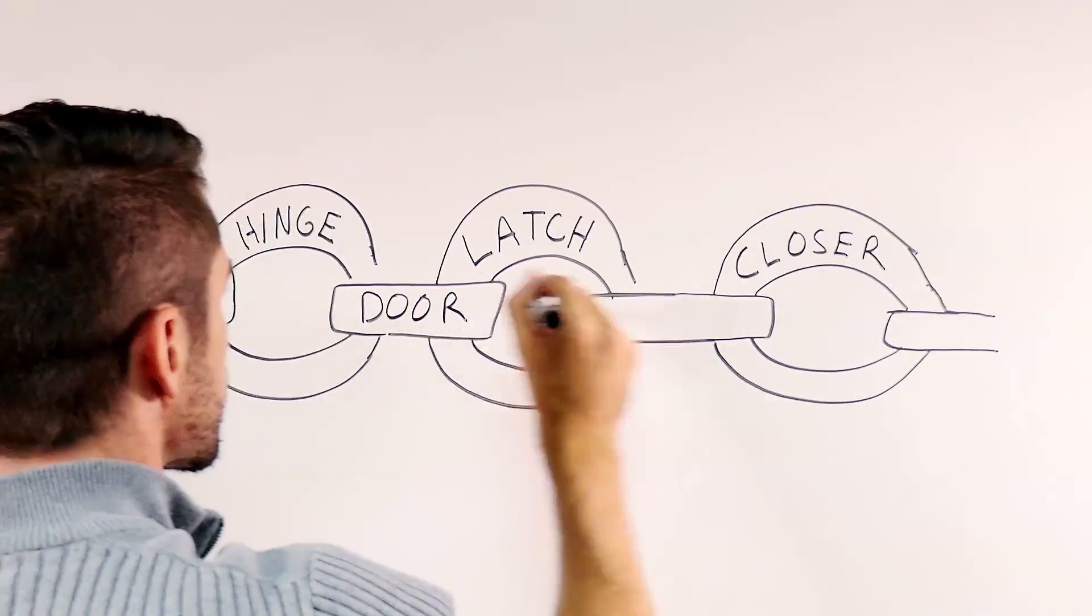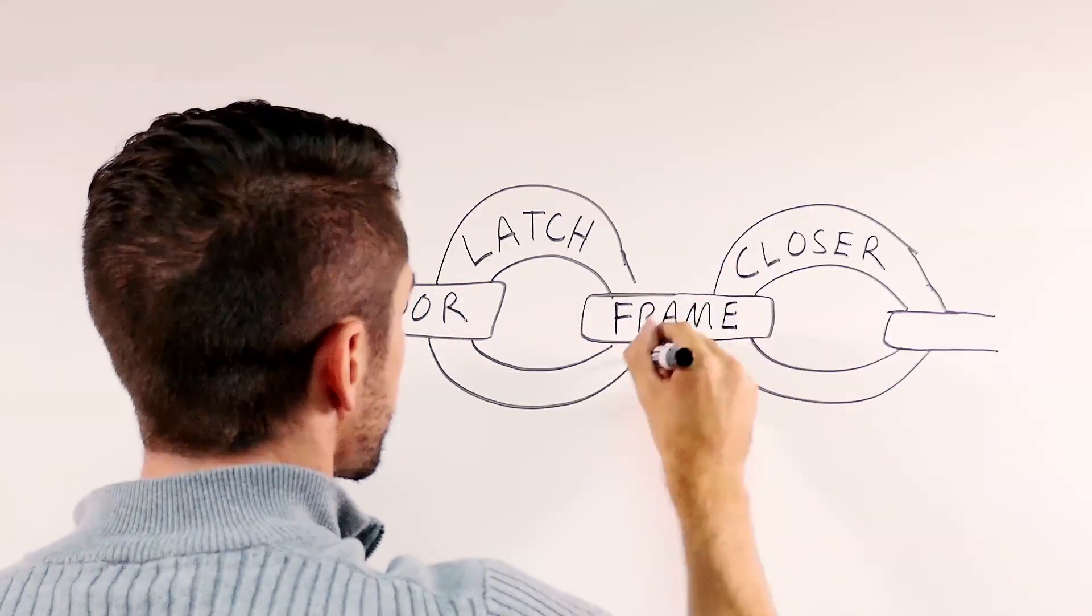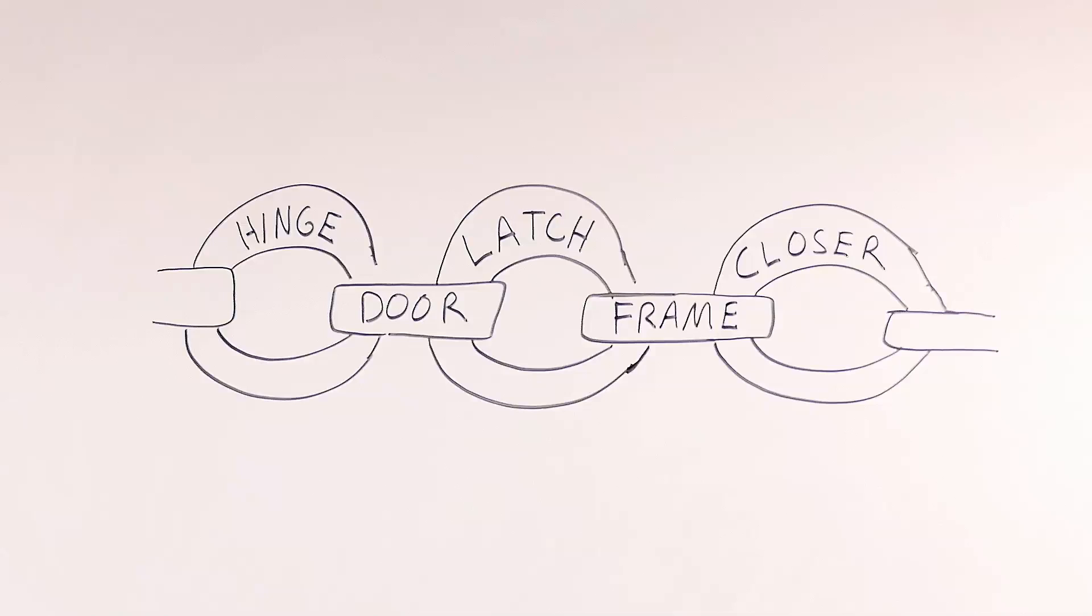Each component of a fire door assembly has an important job to do. One weak link could allow the fire to spread.